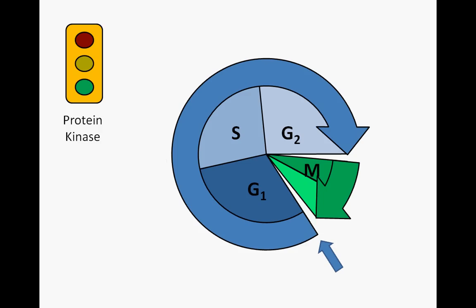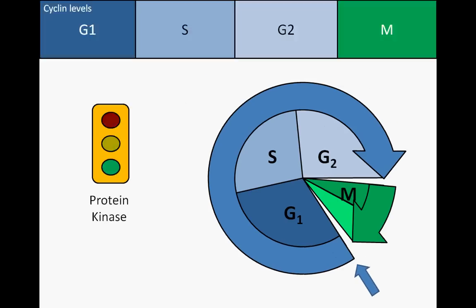Cells can be triggered to move through the cell cycle by the activity of protein kinases, which give a go-ahead signal for cycle advancement. Although protein kinases are present throughout the cycle, they are not active until bound by a cyclin molecule.